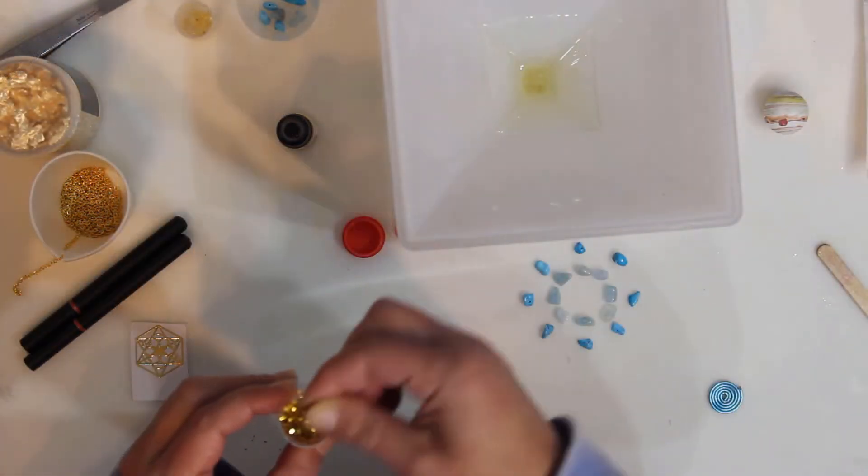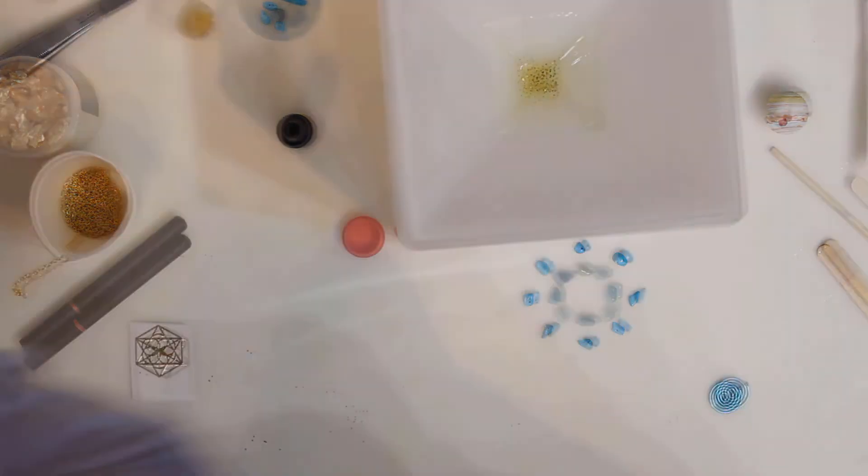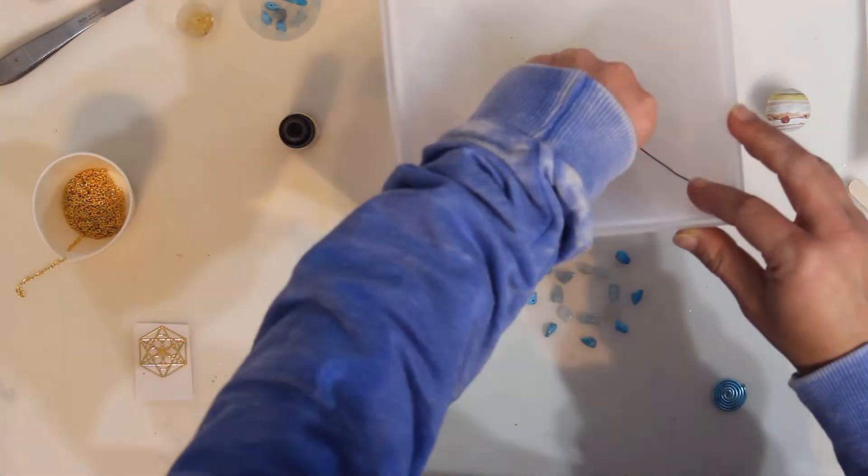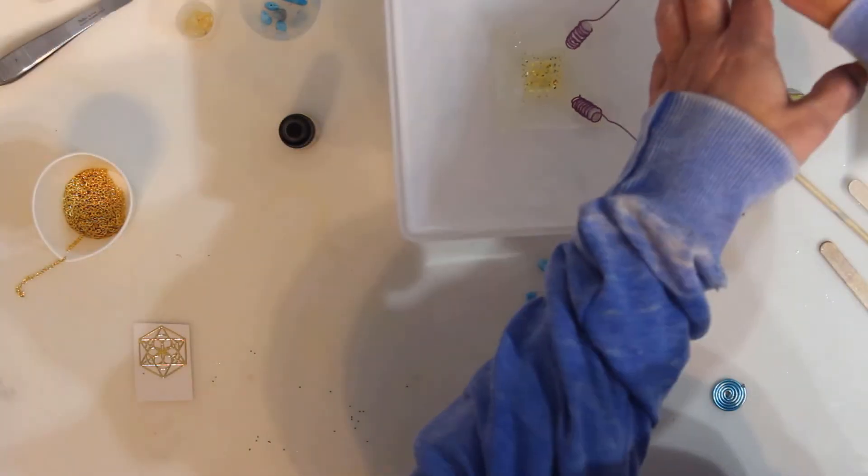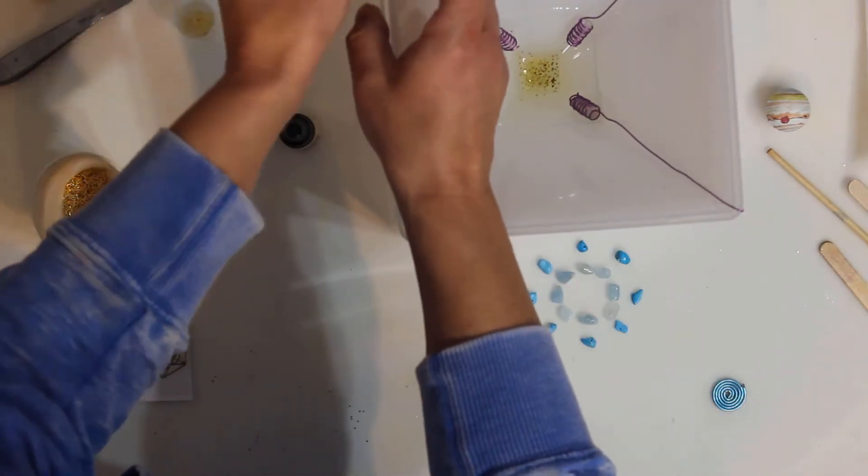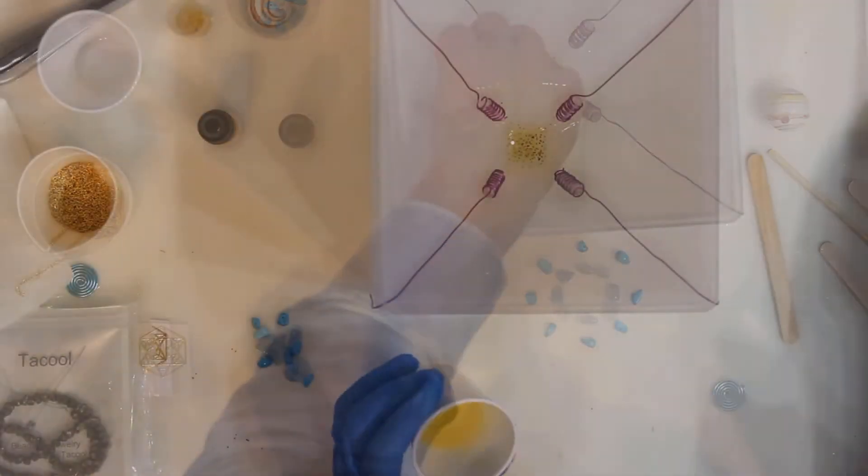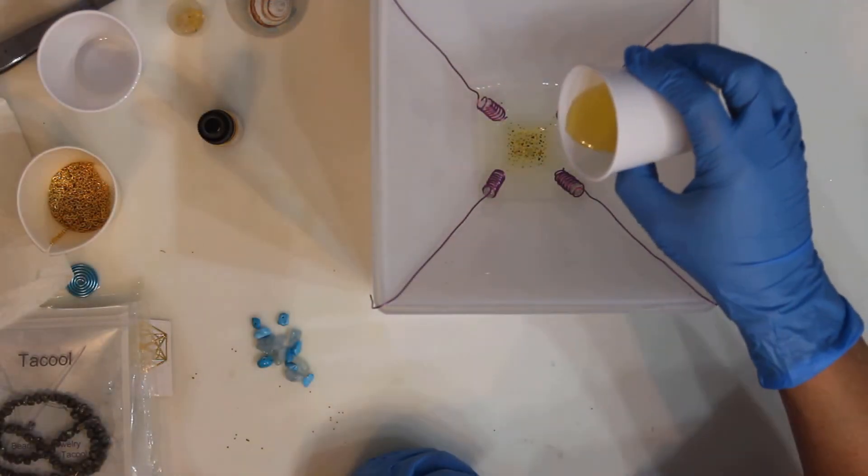Before beginning the next layer I will sprinkle some gold glitter and then suspend the crystals from the four corners so they tilt inward toward the center. Once suspended I will pour darker orange yellow resin.